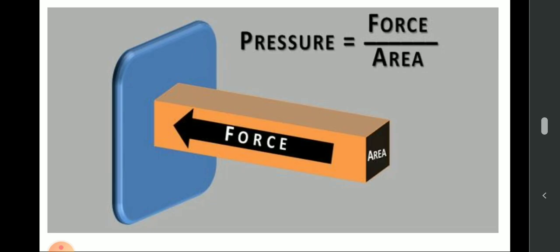Now the combined effect of force and area on which it acts can be described by a quantity called pressure. Pressure is defined as the force acting on a unit area. Its formula is P is equal to F upon A.